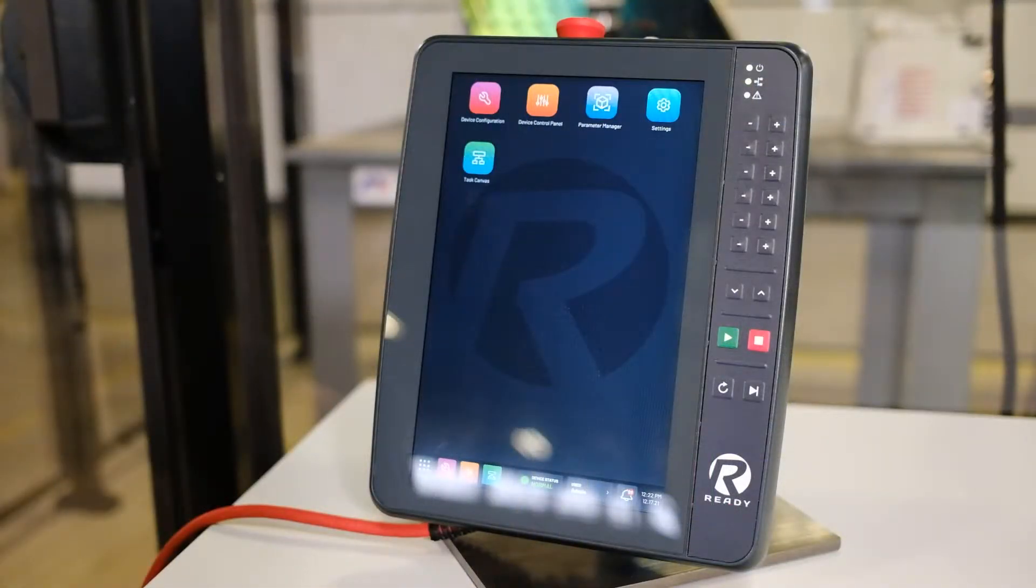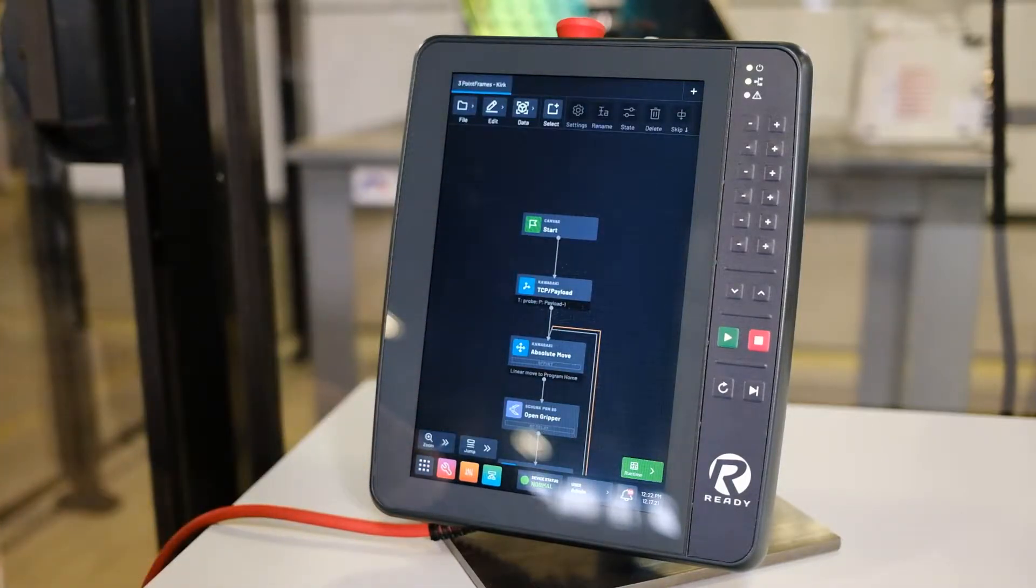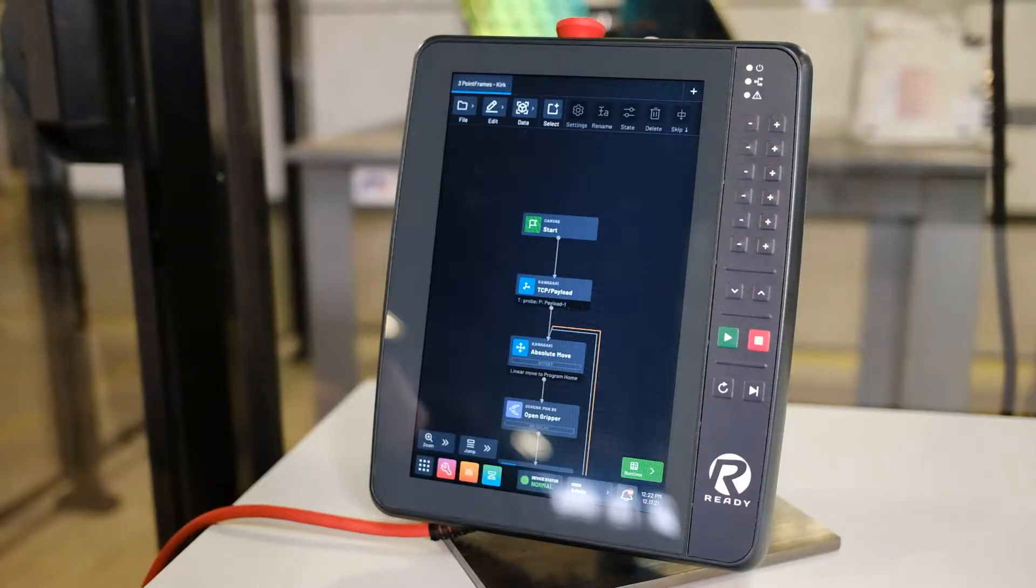Let's start by taking a look at how to create a three-point frame. Let's go into Task Canvas. Now here we see a task that we've created specifically to demonstrate the utility of three-point frames.